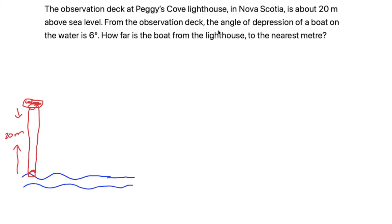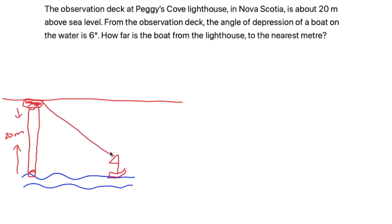The next sentence says: 'From the observation deck, the angle of depression of a boat on the water is 6 degrees.' So let's draw a boat. The angle of depression is the angle of sight at which a person can see. Pretend you're standing on the observation deck — you look directly down at the boat and the angle of depression forms 6 degrees. This angle over here — not the angle straight down — but the angle from the line of sight to the boat is the angle of depression.